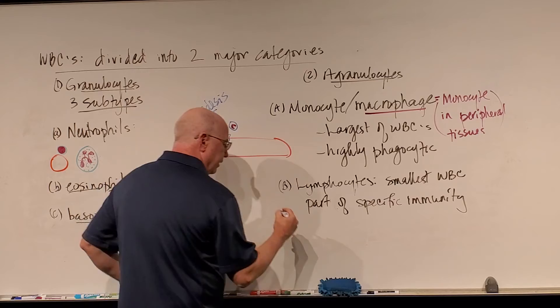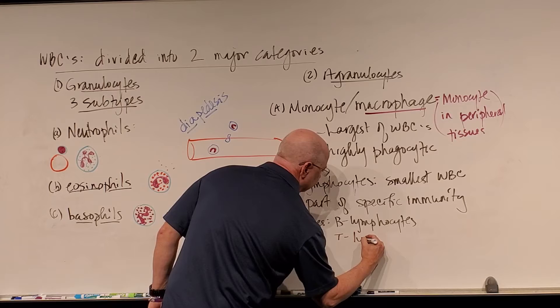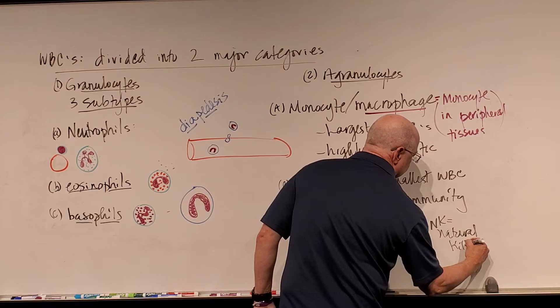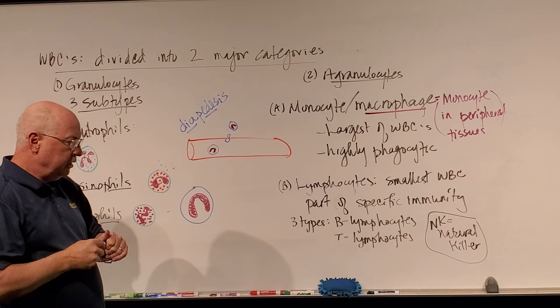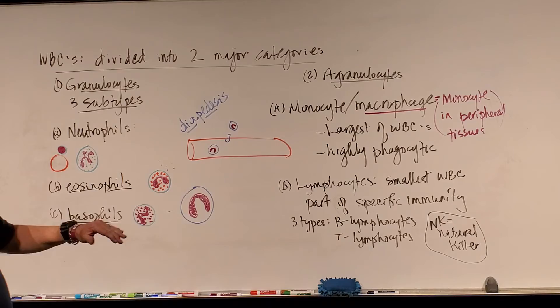There are three types of lymphocytes we're going to focus on: B lymphocytes — we'll talk about those later; T lymphocytes; and then another class called NK cells — NK stands for natural killer cells. The natural killer cells go with the innate immunity group, although it's debated since they are a lymphocyte. The B and T lymphocytes make up our specific immune system.